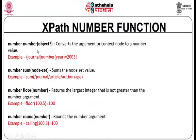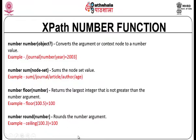The number functions supported in XPath include: number() converts the argument or current node to a number value. sum() sums the values in a node set. floor() returns the largest integer not greater than the number argument. round() returns the number argument after rounding it.